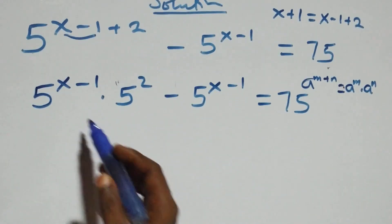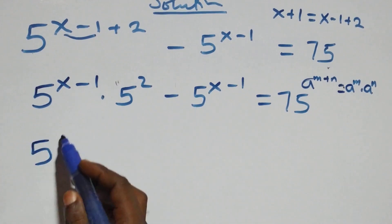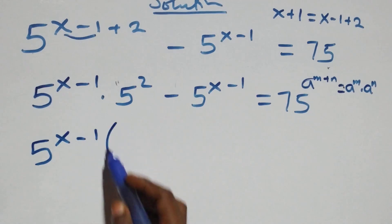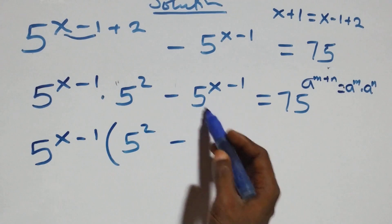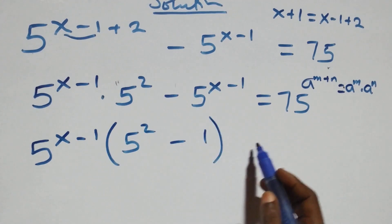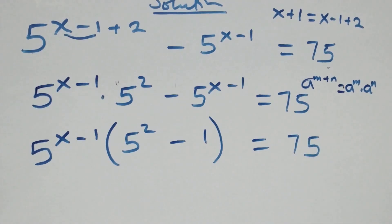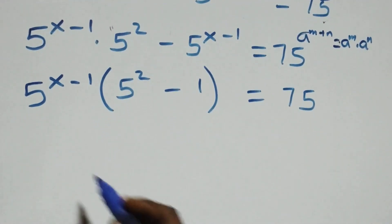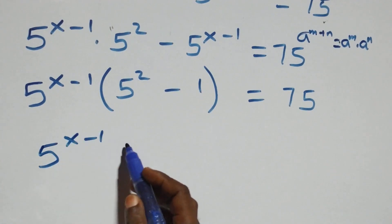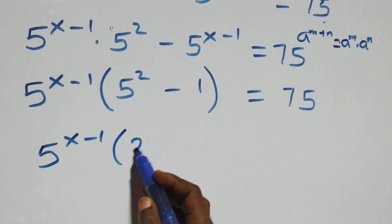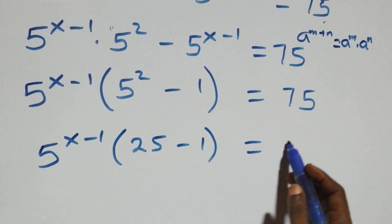Next, 5 raised to the power x minus one is a common factor. Factoring it out, we have 5 raised to the power x minus one, times the bracket 5 squared minus one, equals 75.